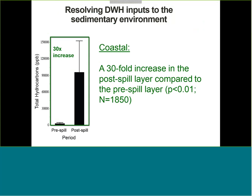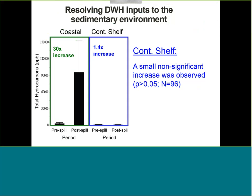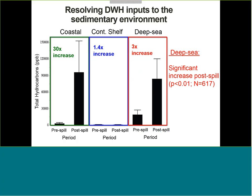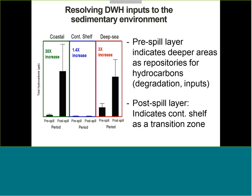Comparing the surface layer to the pre-spill layer by zone: the coastal area shows a 34% increase in hydrocarbon concentrations compared to the pre-spill layer. The continental shelf shows a small, non-significant increase — so there was no significant deposition of hydrocarbons in that area. In contrast, the deep sea shows a three-fold increase after the spill. Looking across the whole study area, the deep areas function as a repository for hydrocarbons, with the continental shelf acting as a transition zone where oil passes through without significant deposition.